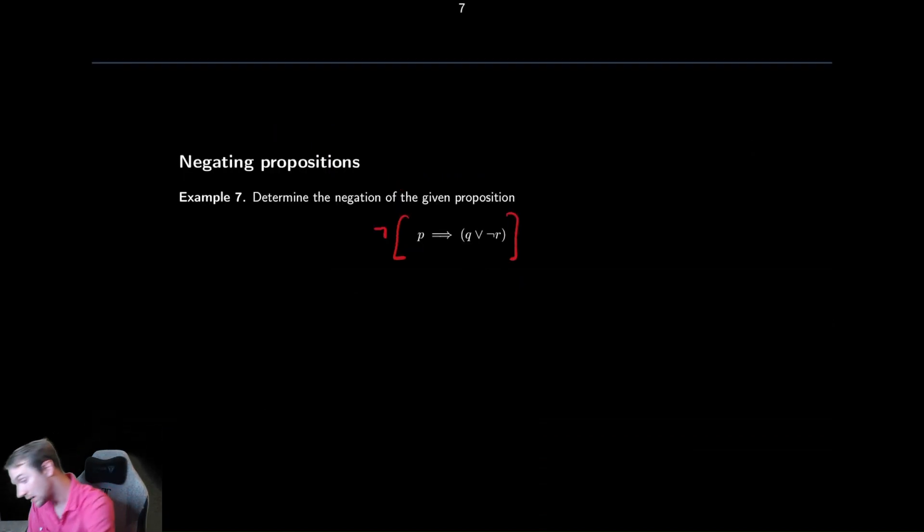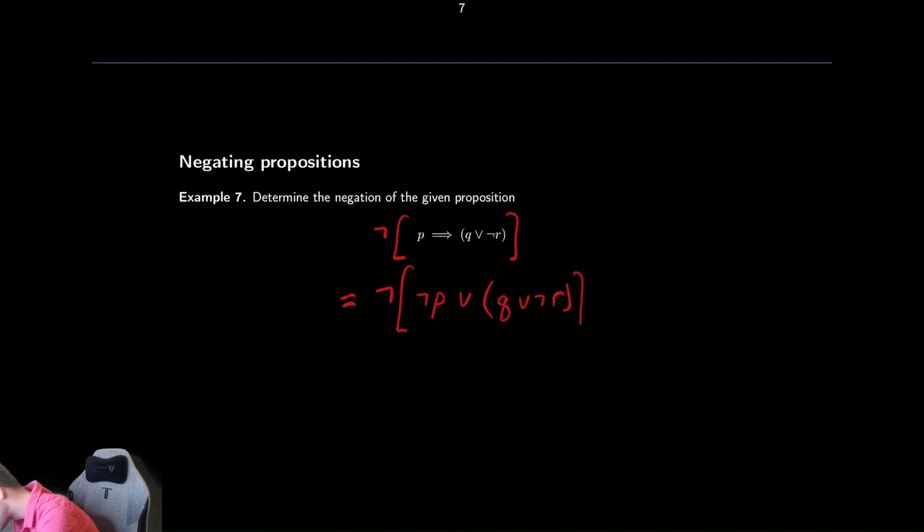So we begin by rewriting this as not, and then the implication we write as not p or q, but q in this instance is the entire end of the implication which is q or not r. That's our first step is to take the implication and write it as an or. I again often find that the easiest.